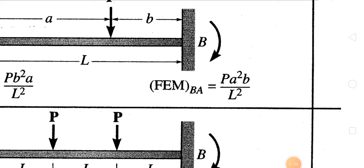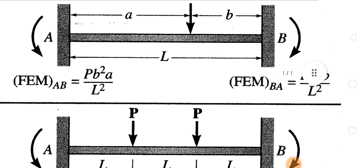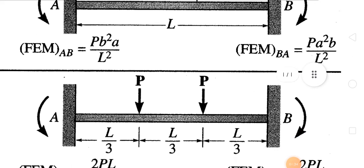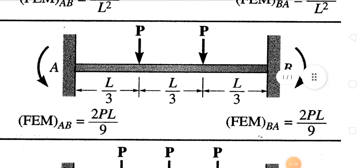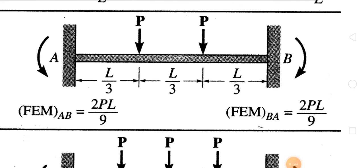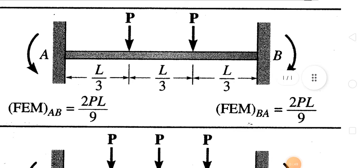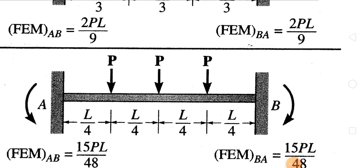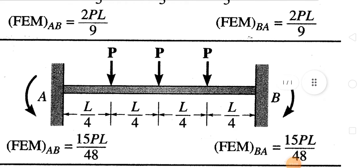To memorize: when we calculate the moment at the B side, we square 'a'; and when we calculate the moment at the A side, we take care of 'b'. Now when there are two loads acting at distance L/3 from the fixed ends, the formula gives 2PL/9 at the A side and 2PL/9 at the B side.